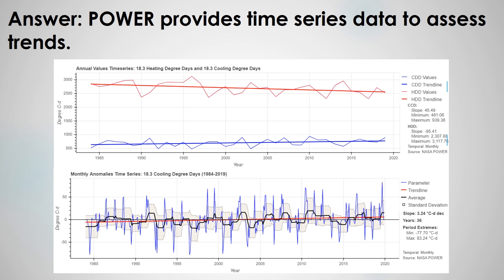Power provides time series data to assess trends. From the plots shown, it looks like this location's heating and cooling needs are changing. To determine if heating and cooling needs are changing, we evaluate time series trends of cooling degree days and heating degree days, which are primary inputs used to determine climate zones. Building climate zones help inform building code requirements for heating and air conditioning system sizes.